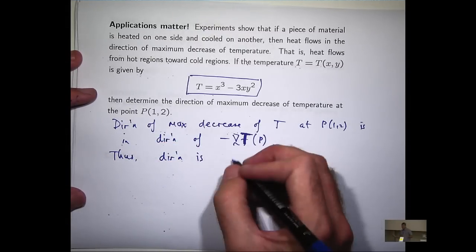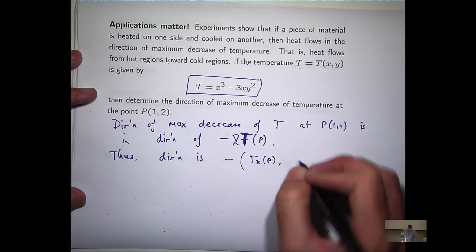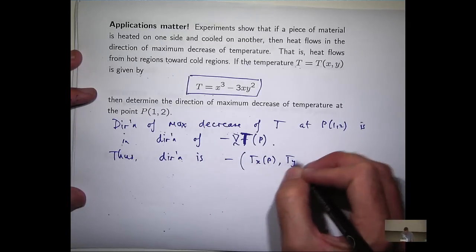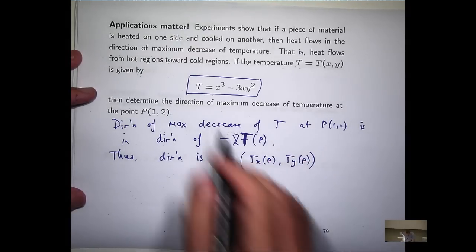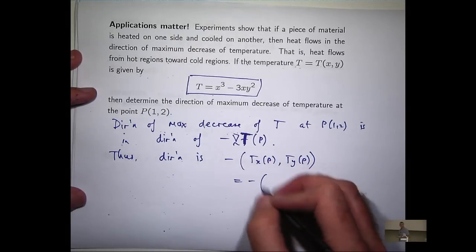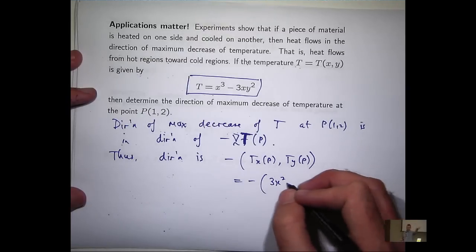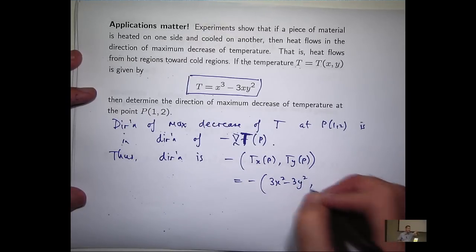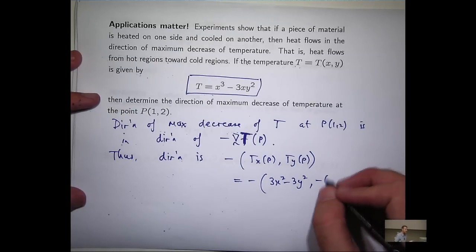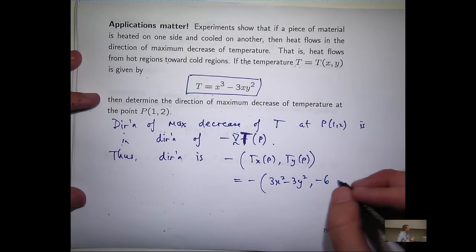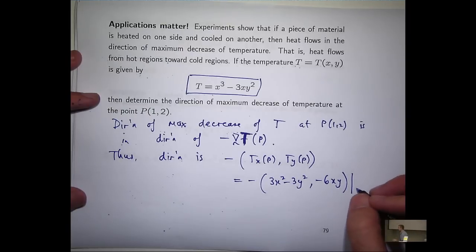So what are we going to get? We're going to get 3x squared minus 3y squared minus 6xy, evaluated at (1, 2).